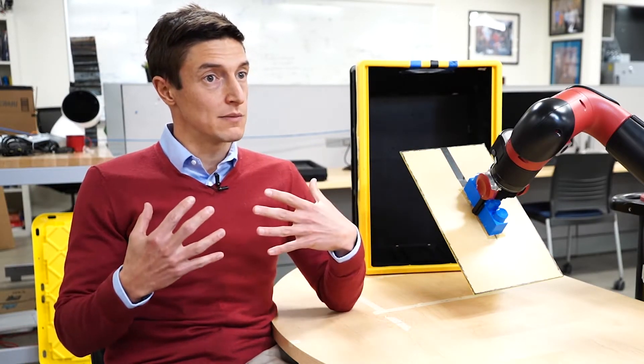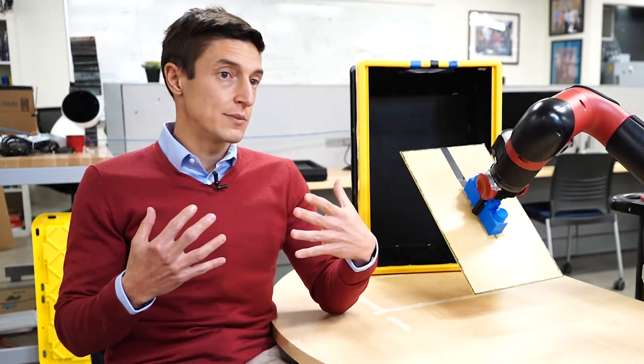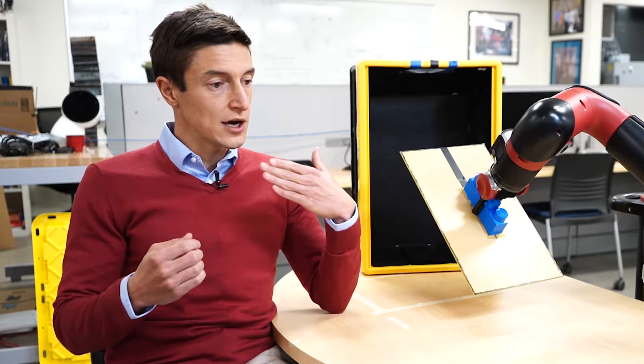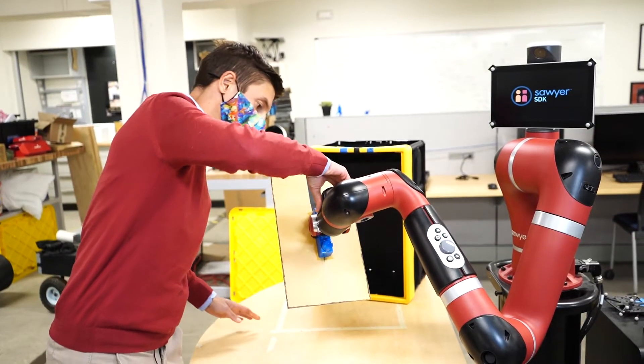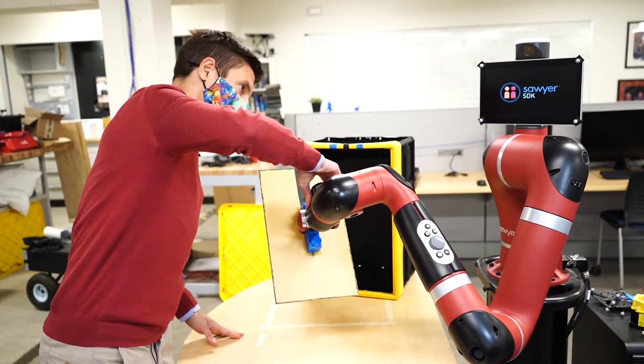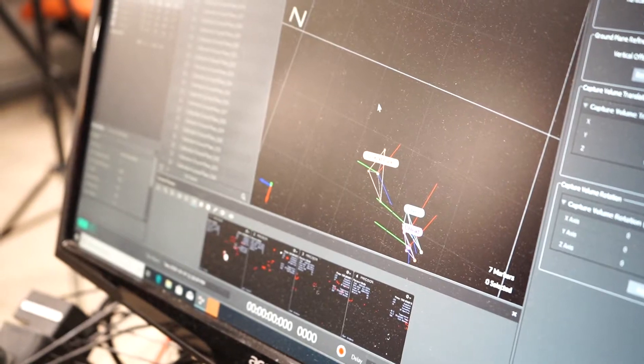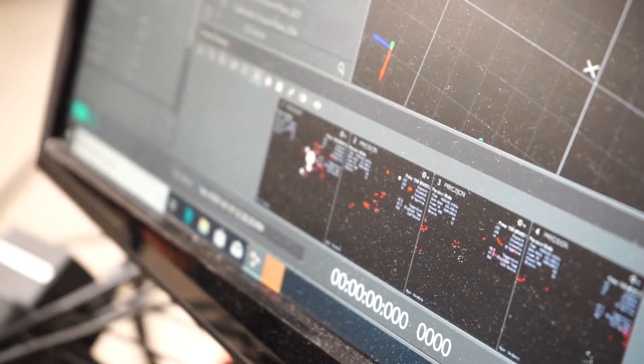So there is a perception problem from humans to robot, and most importantly, there is a communication problem from robots to humans. This I think is the single most important question that the field at large should investigate in future years.